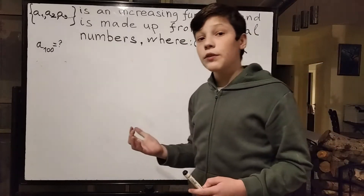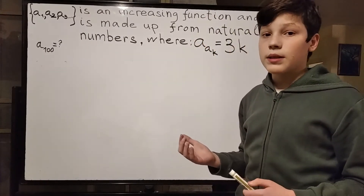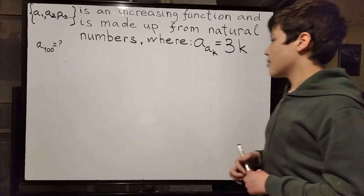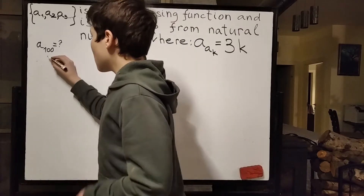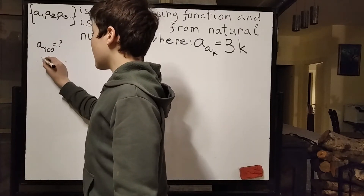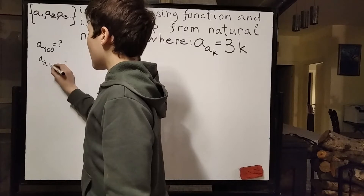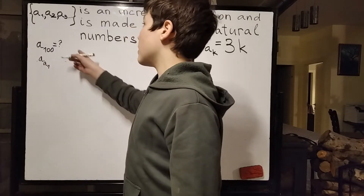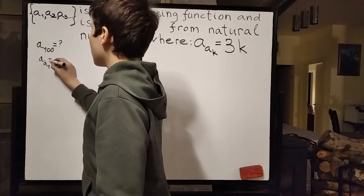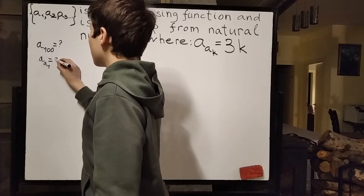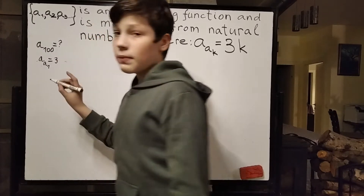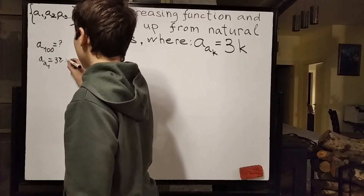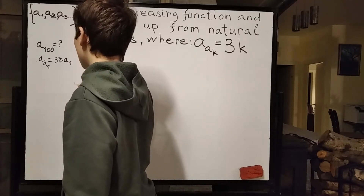We can actually find a term in the series by just plugging k is equal to 1 in here. So when we plug k equal to 1, we get a of a of 1. And because a1 is a natural number, a of a of 1 is a term in the sequence, is equal to 1 times 3, which is 3. Which means 3 must be bigger than or equal to a1.